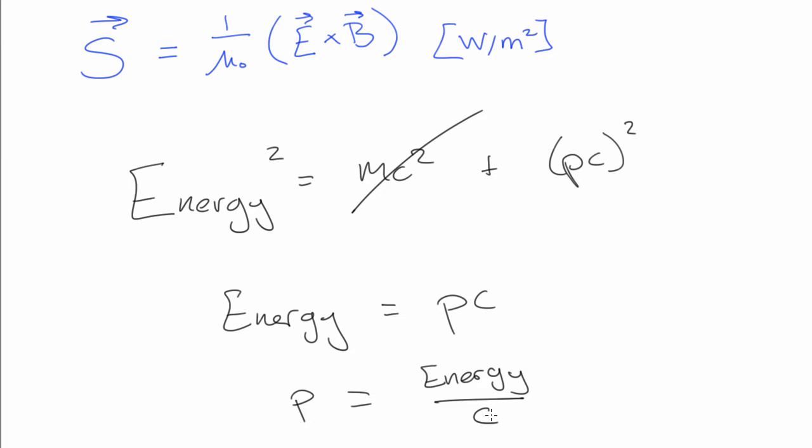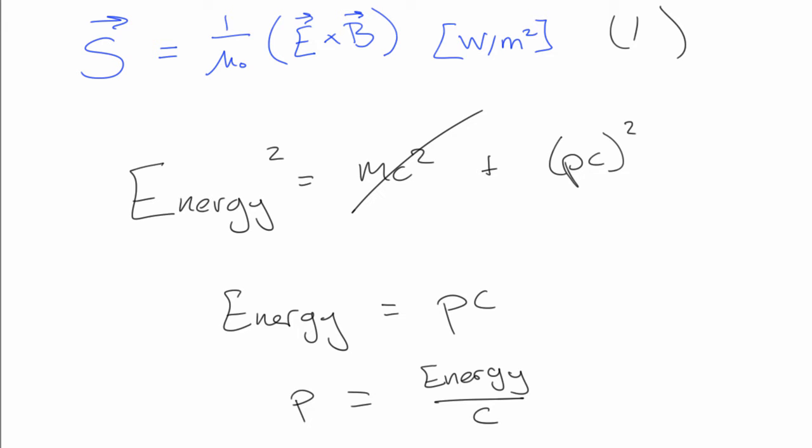Now, just before we calculated that the energy flux of an EM wave is the Poynting vector, which we can see up here at the top. So if we wanted to get the momentum flux, it is simply just the Poynting vector divided by c.